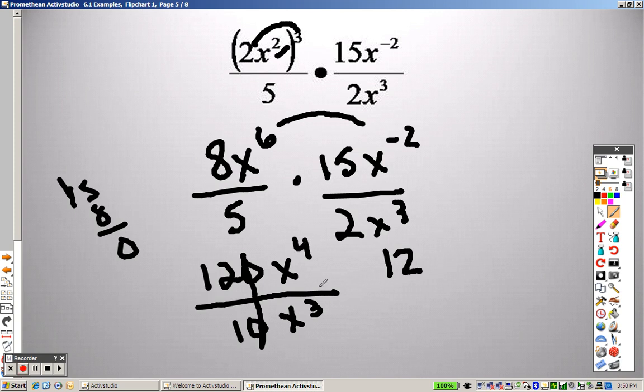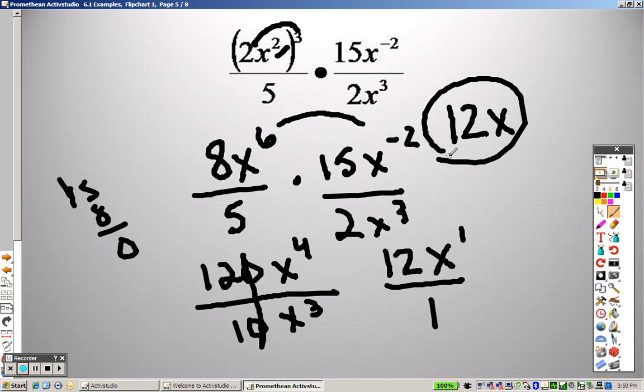And when I subtract, which exponent is bigger? Well, that means the exponent is on top because the 4 is bigger. 4 minus 3 is 1. So really this is what you end up having, which we can just rewrite as 12x as our answer.